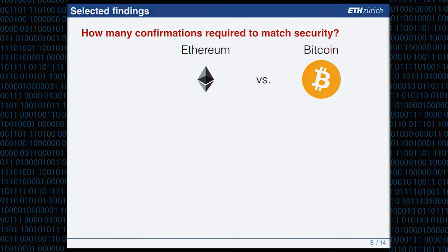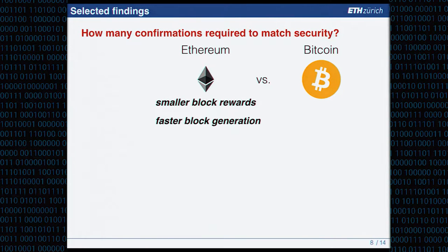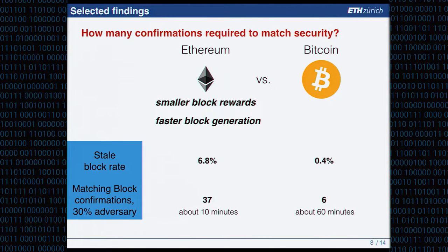Specifically comparing Ethereum and Bitcoin using our security model: Ethereum has a smaller block reward in US dollars and a much faster block generation time — 10 minutes versus 15 seconds. Given the higher stale block rate of nearly 7% in Ethereum versus 0.4% in Bitcoin, against an adversary with 30% of the hash rate, we need 37 block confirmations in Ethereum to match the security of six block confirmations in Bitcoin. However, since block generation time is so small, this only accounts for 10 minutes in Ethereum versus 60 minutes in Bitcoin.